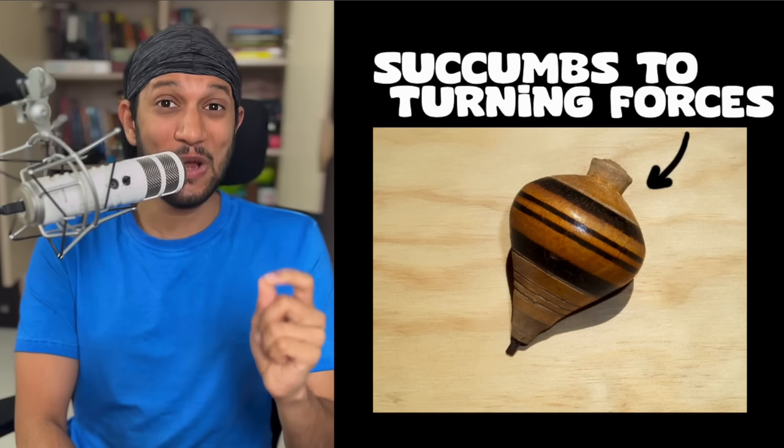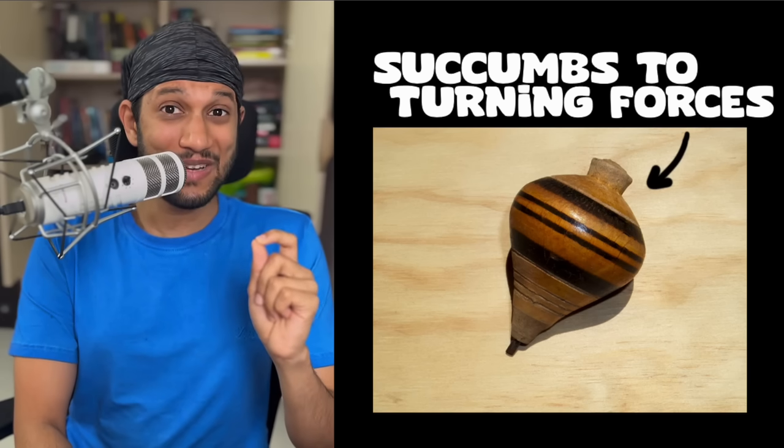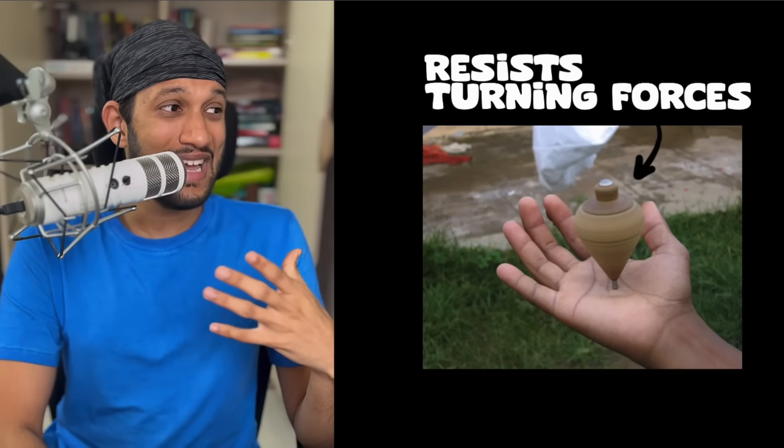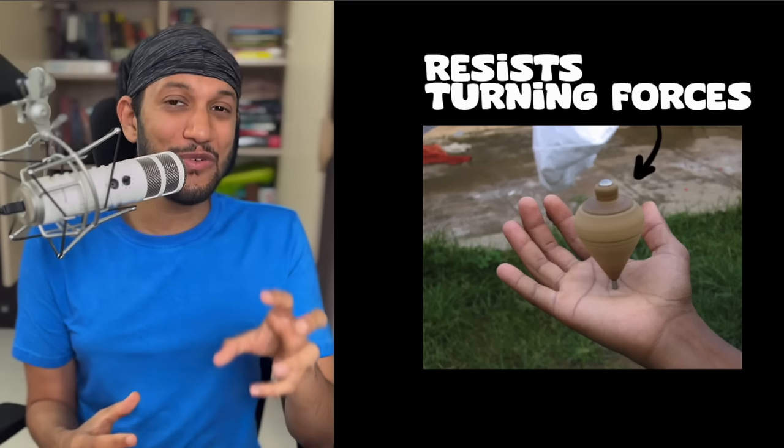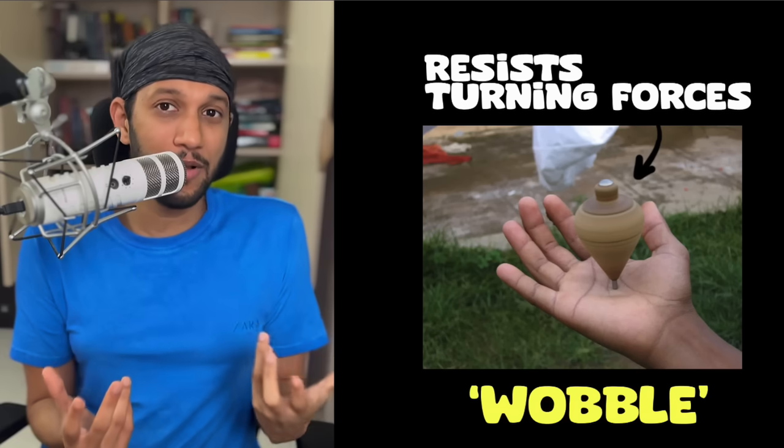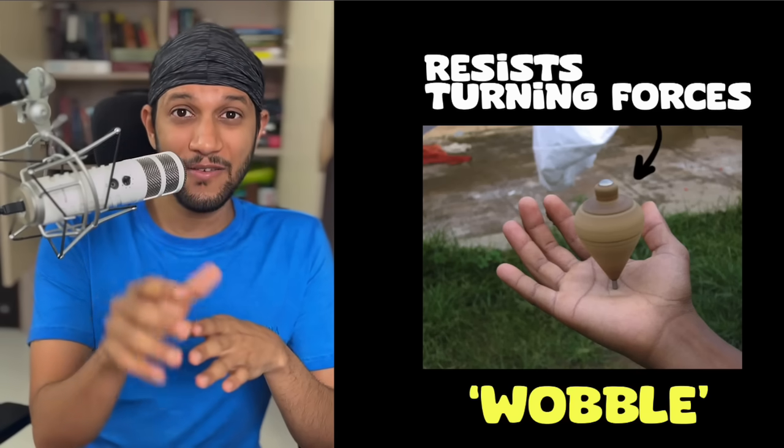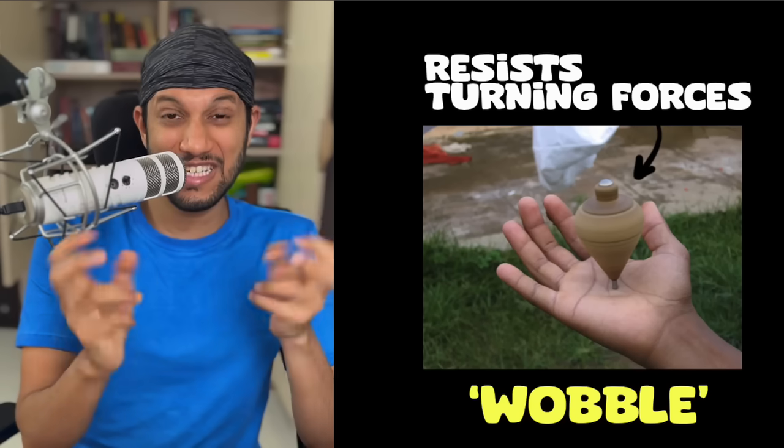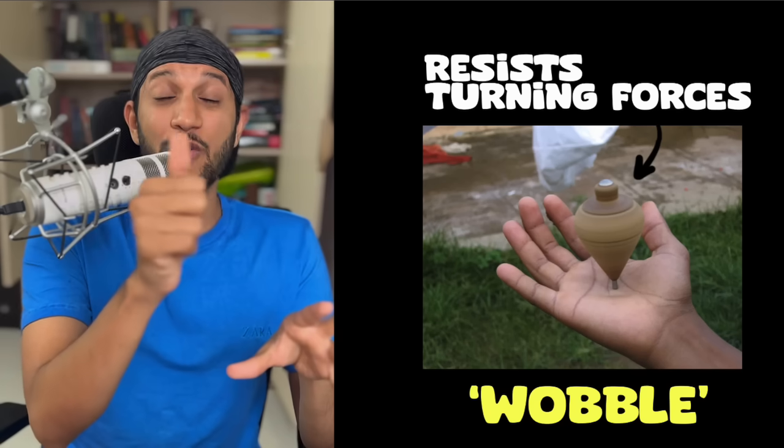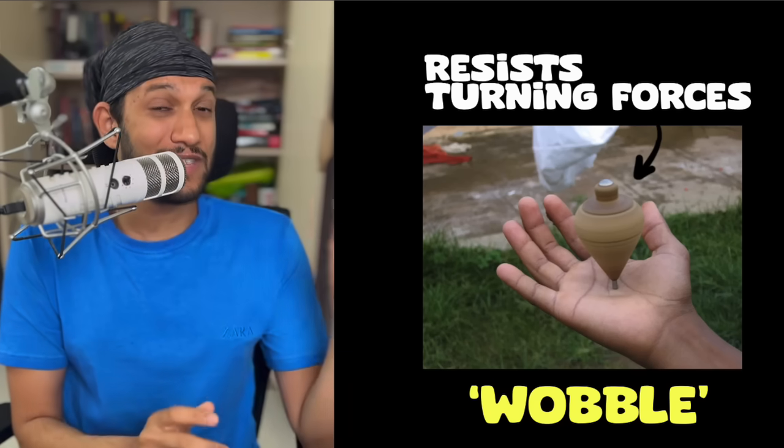But, what if you have a spinning top? Well, then, it doesn't succumb to gravity. It doesn't topple. You see, a spinning top can stay upright. But instead, it sort of just wobbles. Now, we'll not talk about why this happens. But what this means is that if something is spinning, it has the ability to resist turning forces. It has the ability to resist torque. And what ends up happening instead of toppling is it just wobbles.